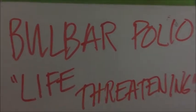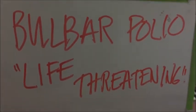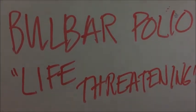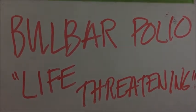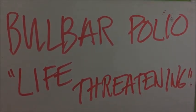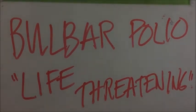Bulbar polio includes 2% of cases and is usually life-threatening. The cranial nerve involved in this type of polio is the vagus nerve. Symptoms may include nasal twang or hoarseness of the voice, nasal regurgitation, dyspnea, and dysphagia.